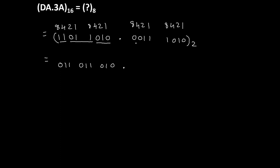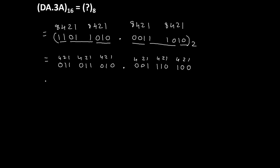From the fractional point going right, we also make groups of 3 digits. First group is 0, 0, 1. Second group is 1, 1, 0. Third group is 1, 0 — and we add one more 0 to complete the group, since this 0 has no significance after the fractional point. Now using the 421 code: 2+1=3, again 2+1=3, then 2. Fractional point stays. Then 1, then 4+2=6, and last group is 4. So the octal equivalent is 332.164 to the base 8.